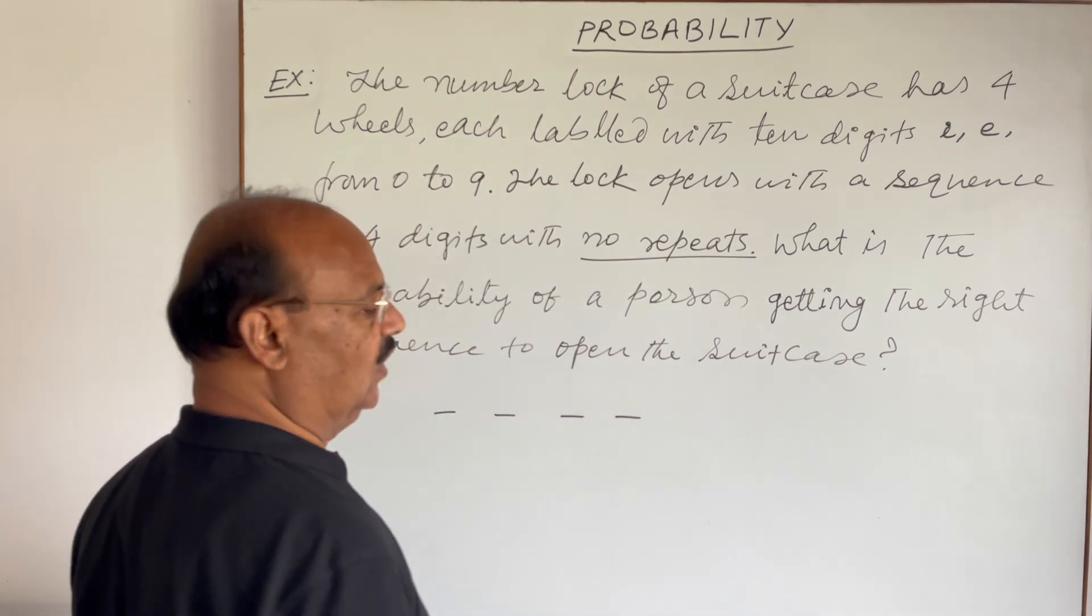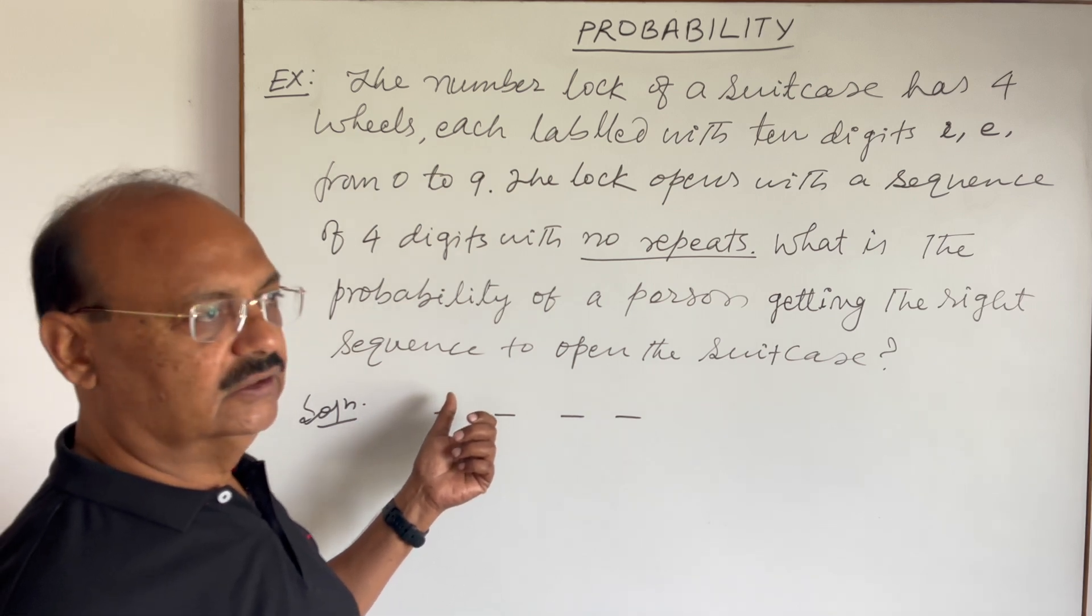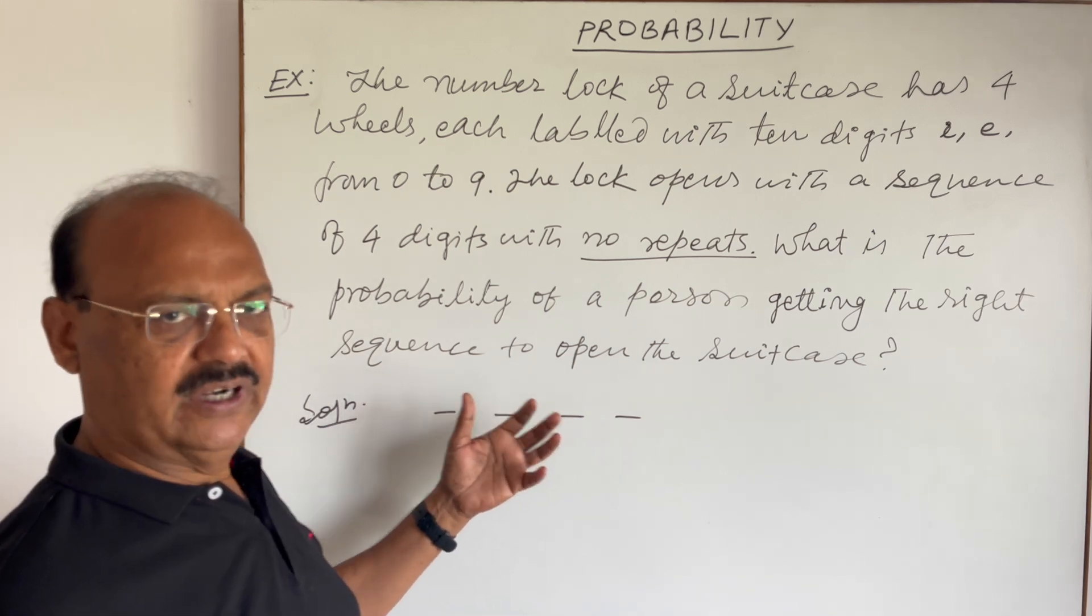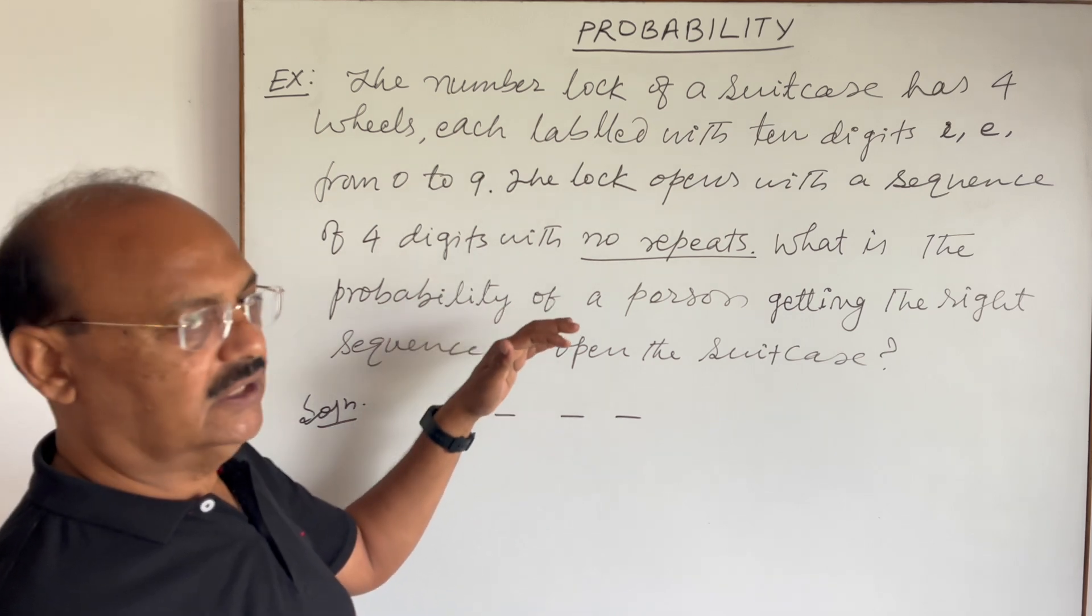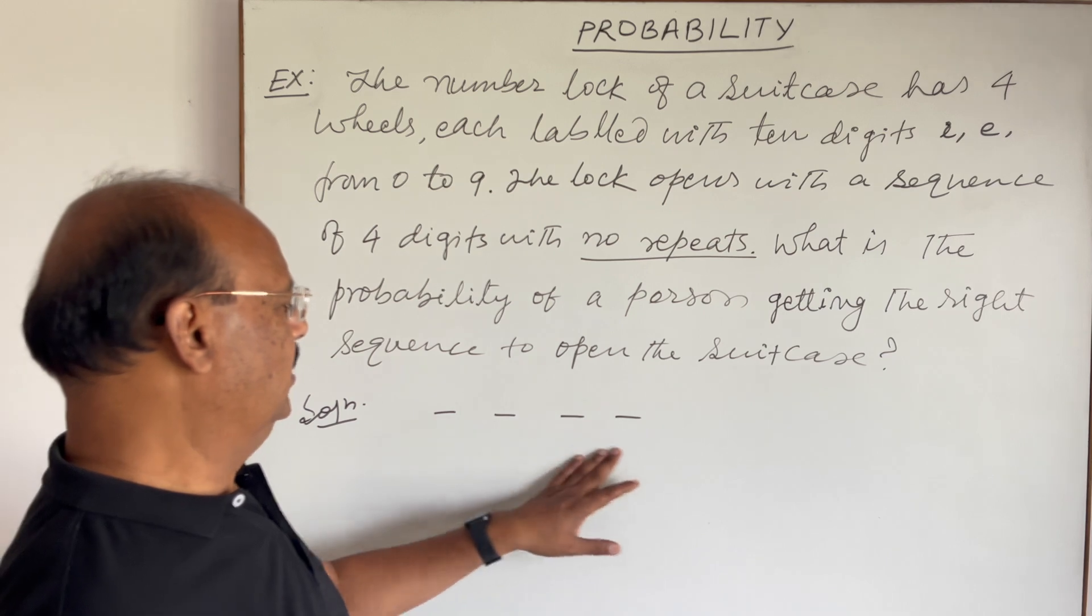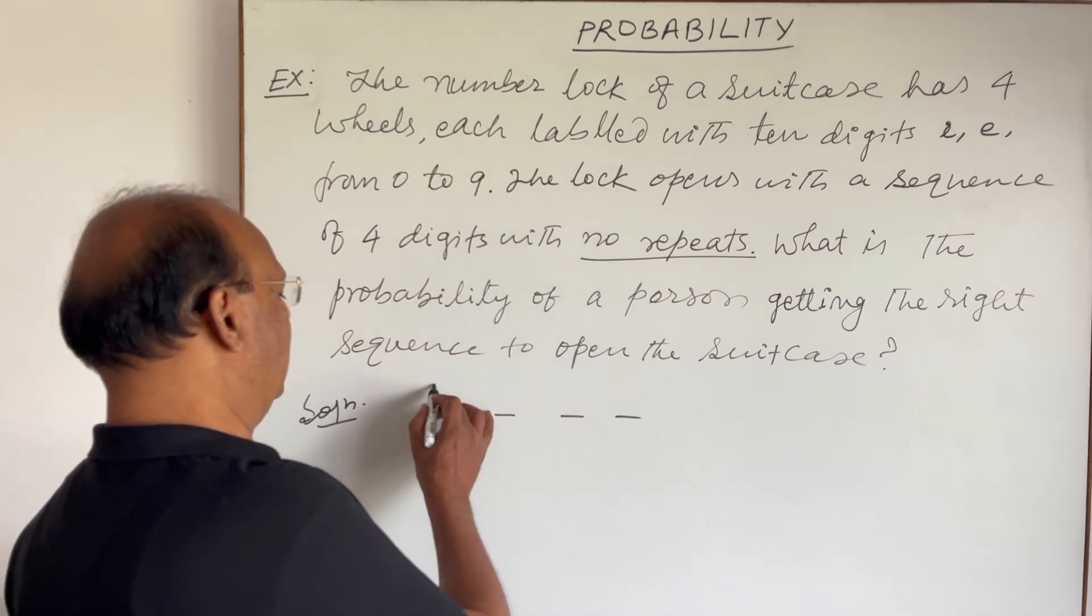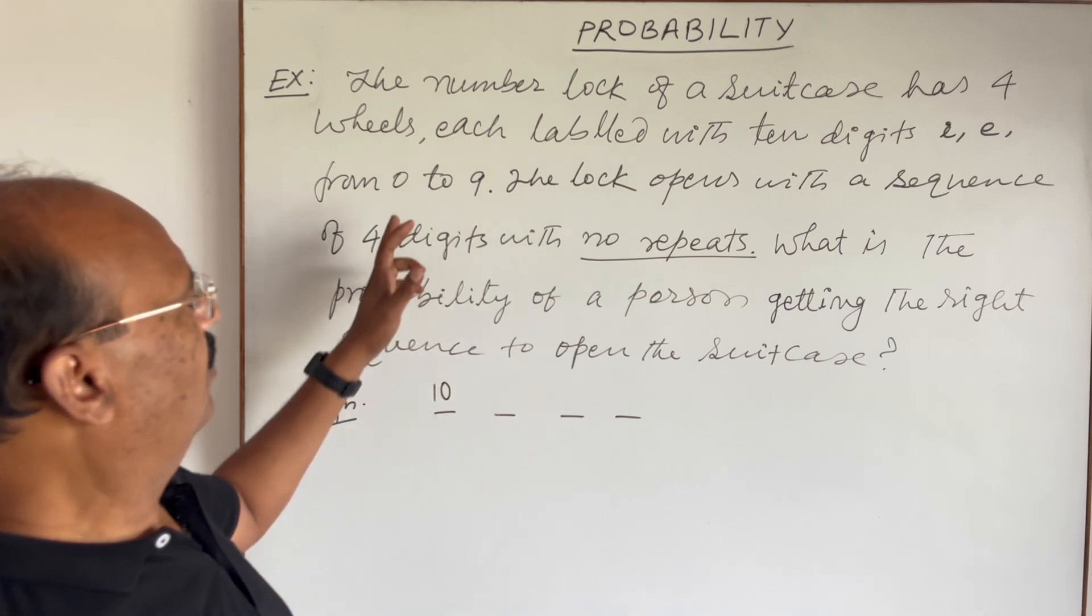One, two, three, four. Suppose we start putting the proper number for making the sequence perfect to get the lock open, suitcase open. So if we start with this lock, here we are having ten options. We can put any number from zero to nine.